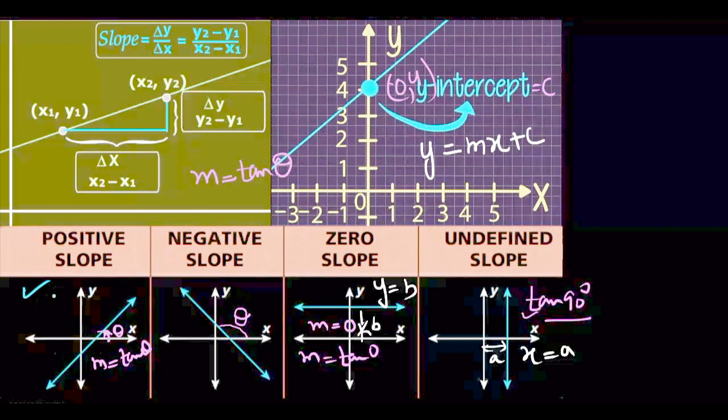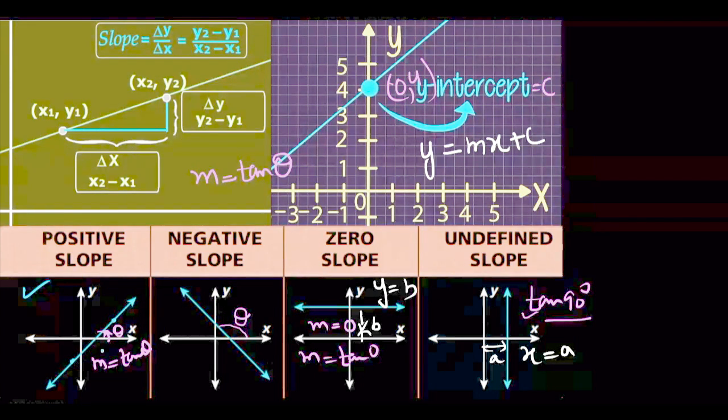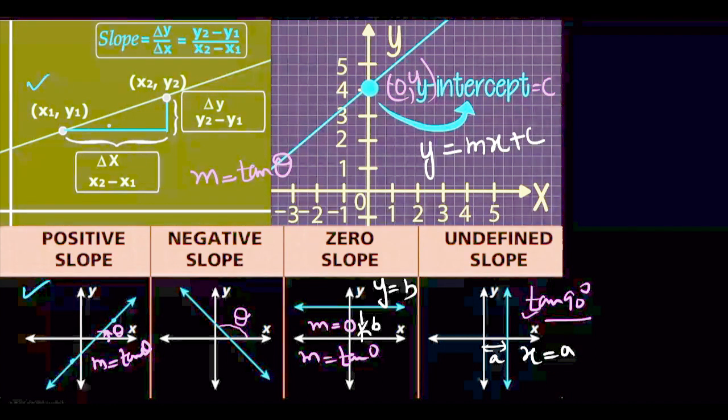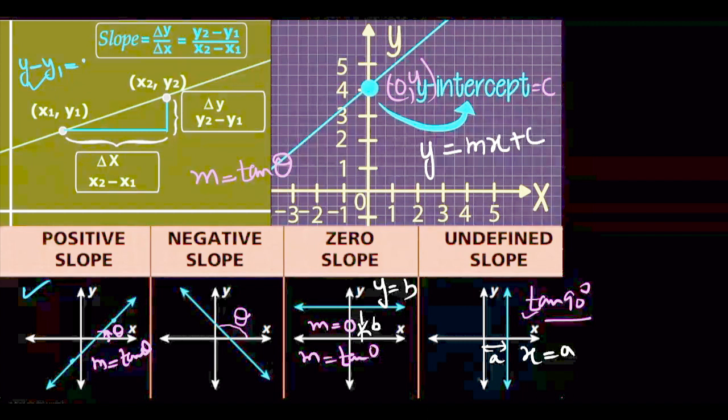Equation of line when two points are given: when two points are given, equation of line is y minus y1 equal to m(x minus x1).